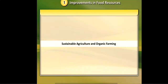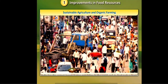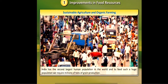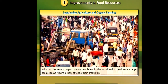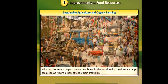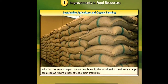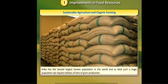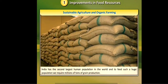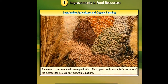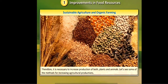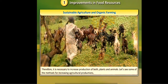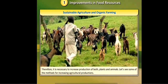Sustainable agriculture and organic farming. India has the second largest human population in the world, and to feed such a huge population we require millions of tons of grain production. Therefore, it is necessary to increase production of both plants and animals.